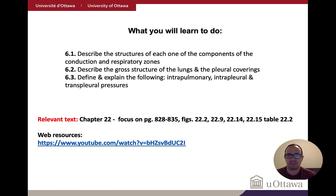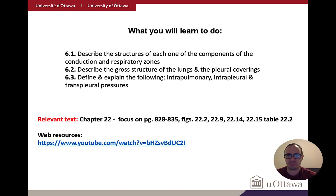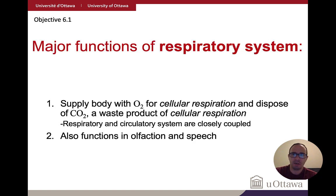The learning objectives are syllabus 6.1 to 6.3, mostly focused on anatomy today. The relevant sections are in chapter 22 — we skipped chapter 21 and won't be covering it. Some web resources are also indicated. The respiratory system's major function is bringing in oxygen for cellular respiration and getting rid of carbon dioxide, which is a byproduct of cellular respiration.